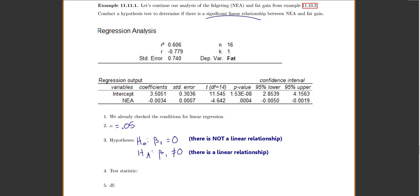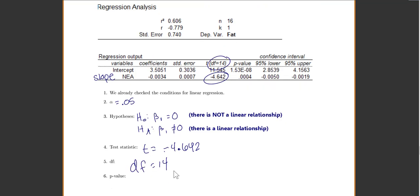Then I need my test statistic. We're just going to pull it off my table. Make sure if you're interested in slope, you're doing that bottom row here for slope. T equals negative 4.642. My degrees of freedom equals 14. My p-value, make sure it's your p-value for slope, not your intercept, is 0.0004.